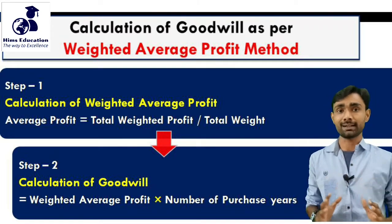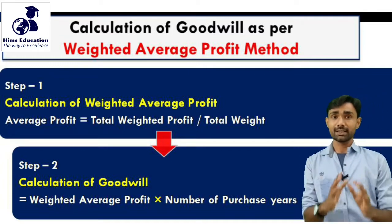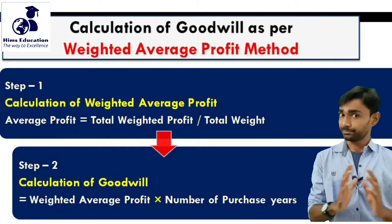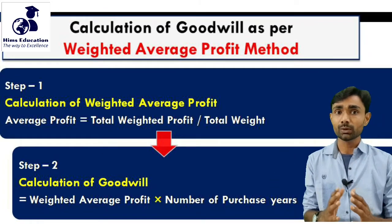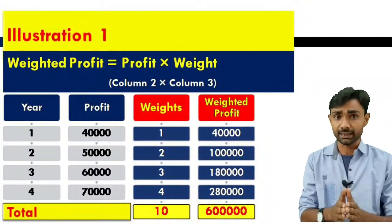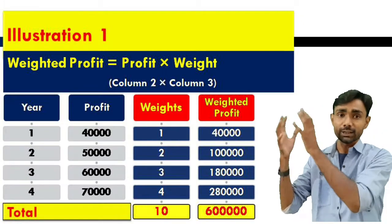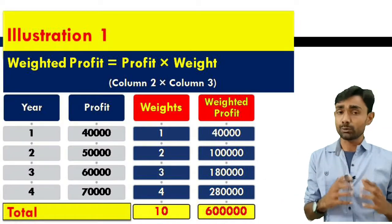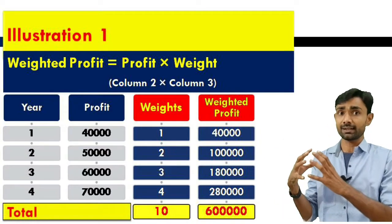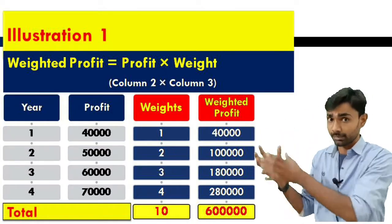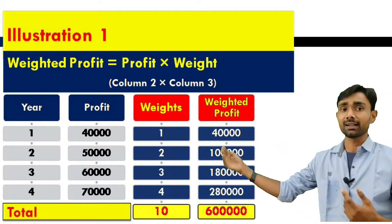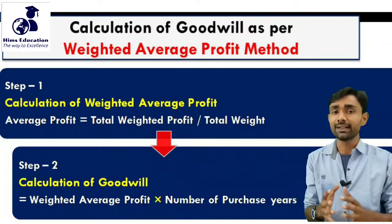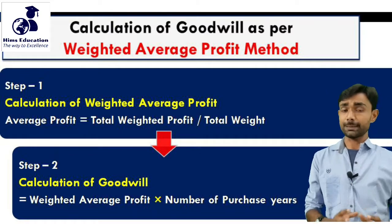To calculate weighted average profit, you need to build a table with 4 columns. The first column is for the year, the second column is for profit, the third column is for weight, and the fourth column is for weighted profit. Column 2 multiplied by column 3 gives us the weighted profit in column 4. Then total weighted profit divided by total weight gives us the weighted average profit. That is step number 1.